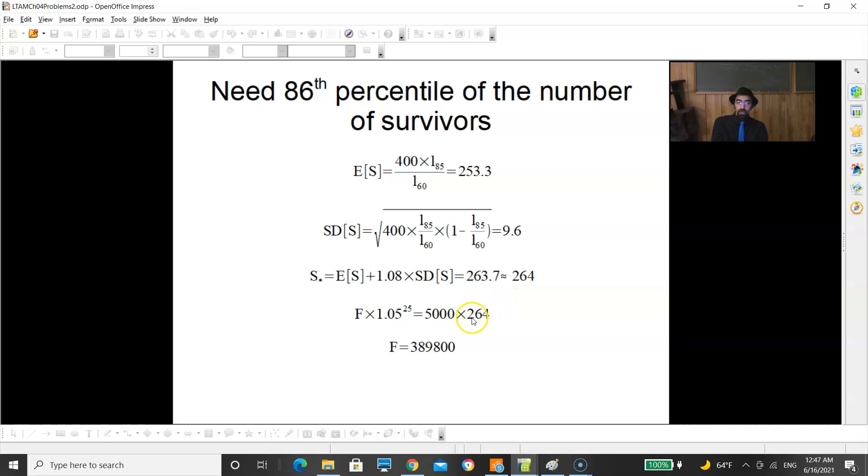Lastly, we know that the fund has to have 5,000 times each of 264 people after 25 years. Because it's earning interest for 25 years, we say initial fund times 1.05 to the 25 equals all this. And that gets us F.